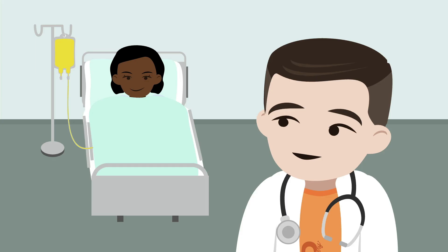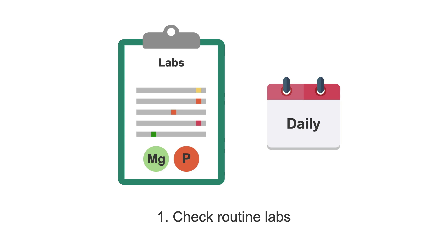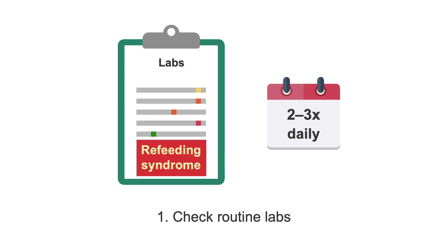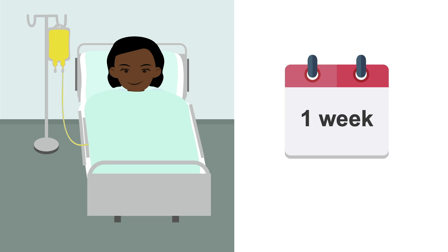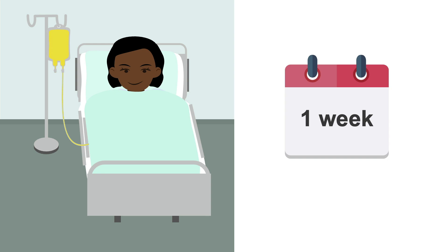While a patient is on TPN, several things need to be monitored. First, when starting out, check routine labs with magnesium and phosphorus at least daily. For patients exhibiting signs of refeeding syndrome, you may need to check electrolytes more frequently — such as twice or three times daily. If a patient has been stable at their goal TPN for a week or so without needing electrolyte replenishment, then labs could be checked every two to three days.